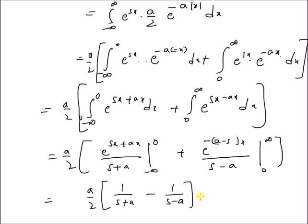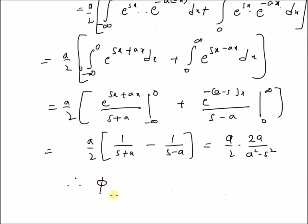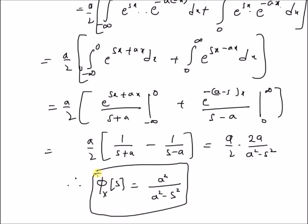For the simplification, this can be written as (a/2) times two a divided by (a squared minus s squared), which equals a squared divided by (a squared minus s squared). Therefore, the moment generating function φ_x(s) of the exponential PDF defined at the beginning is equal to a squared divided by (a squared minus s squared). This is the result we are looking for. Thanks for watching.